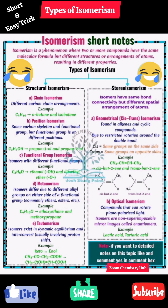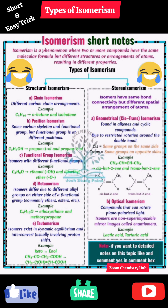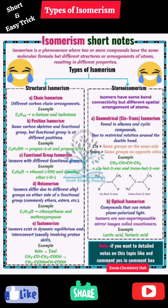Next is optical isomerism. These compounds can rotate plane-polarized light. The isomers are non-superimposable mirror images of each other, called enantiomers. Examples are lactic acid and tartaric acid.